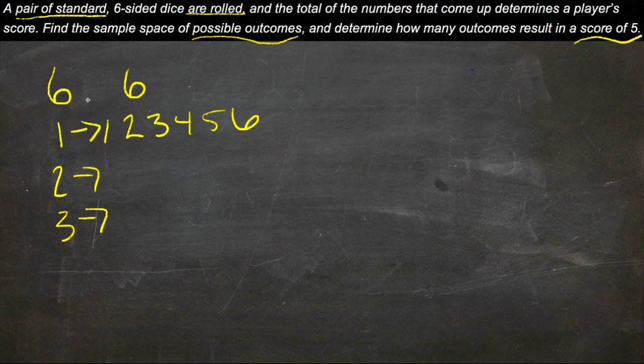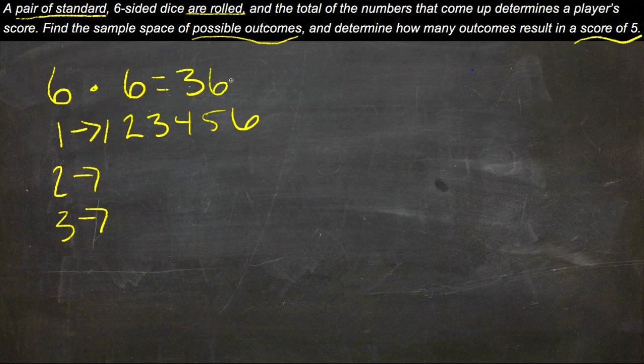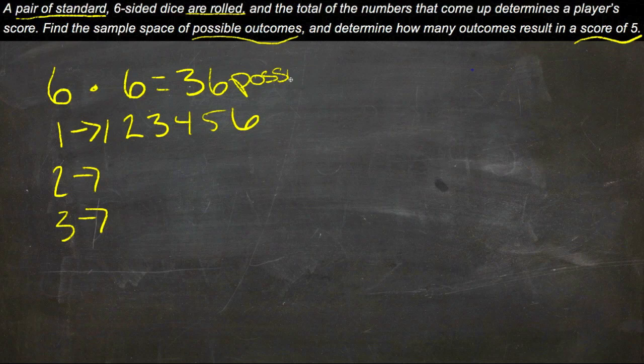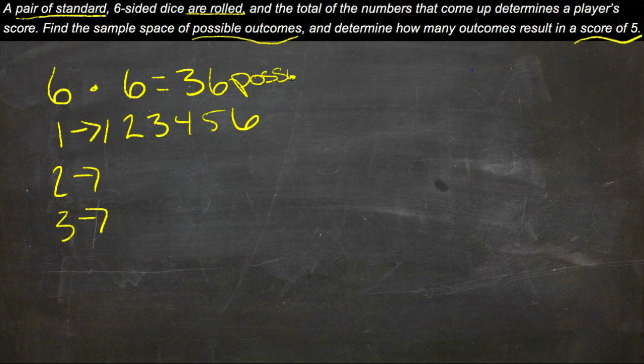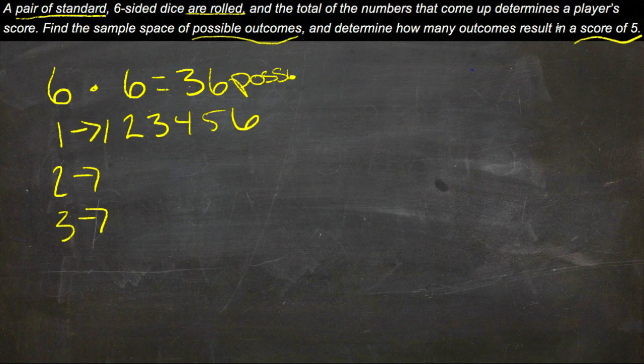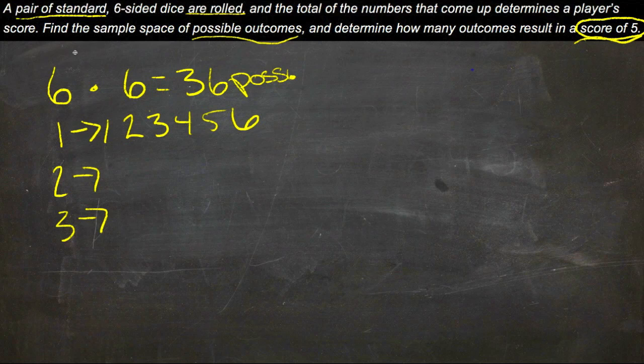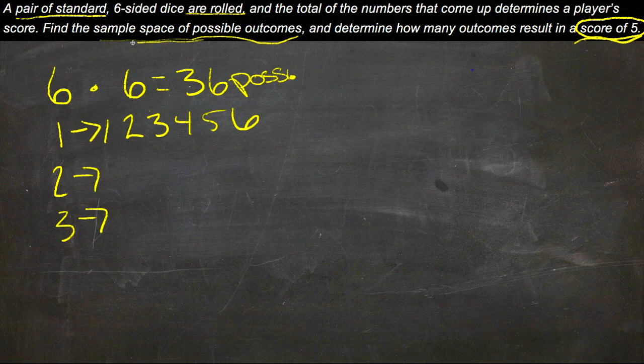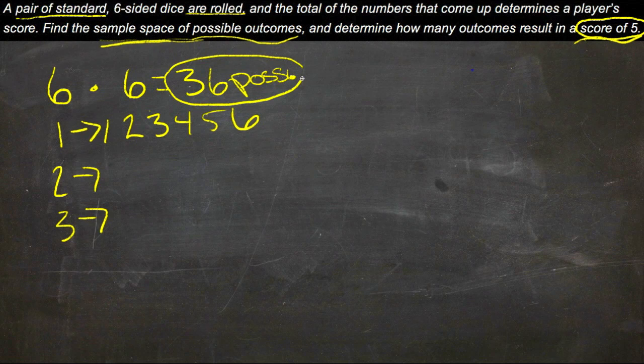So what we end up with is a total of six times six or 36 possibilities. Now out of that 36 possibilities, only some of them are going to add up to be a score of five, but the 36 becomes our sample space of possible outcomes. Then we just see how many of those add up to be a total of five.